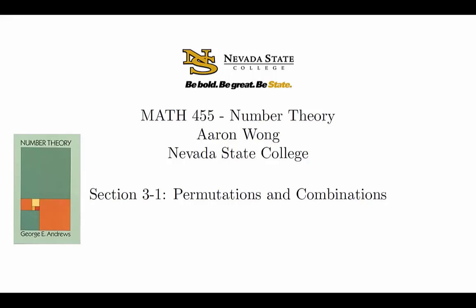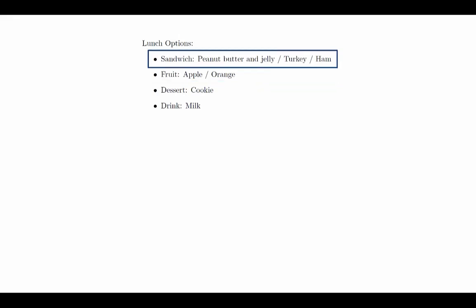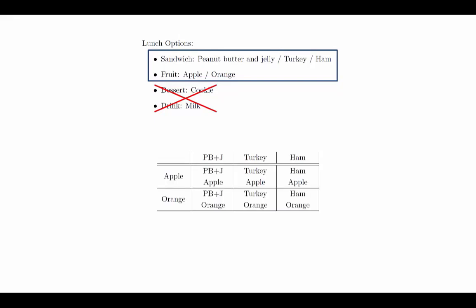The topics of permutations and combinations are generally considered to be topics for a course in combinatorics, but number theory has a way of taking ideas from other areas and using them productively. We will begin by building some basic intuition about making selections. Suppose that you are trying to make simple bag lunches at a school. All the lunches come with milk and a cookie for dessert. But the students can have their choice of a sandwich and their choice of a fruit. The sandwich options are peanut butter and jelly, turkey, or ham, and the fruit options are an apple or an orange. How many different lunches can be made? We will ignore the milk and cookie because both of those are standard. We can represent the choice of sandwich in the horizontal direction and the choice of fruit in the vertical direction, and the number of options is the product of the number of options for each choice — in this case, six different lunch options.